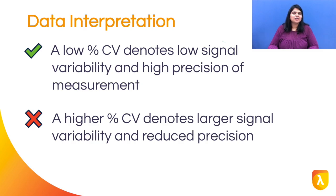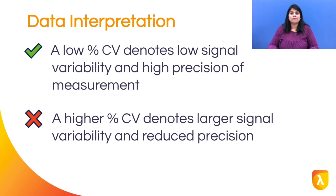How do you interpret your data? A low CV value means low signal variability and high measurement precision. A higher CV, on the other hand, denotes higher signal variability and poor precision. High precision is critical to establish biological significance, and this is what publishers are looking for.